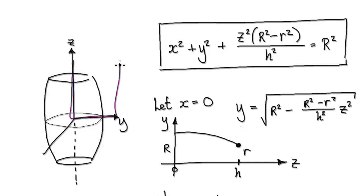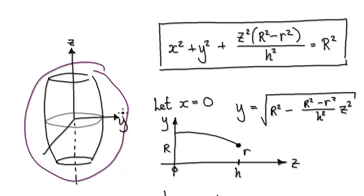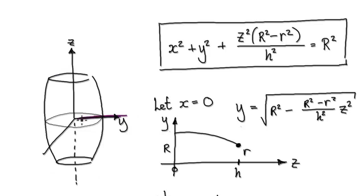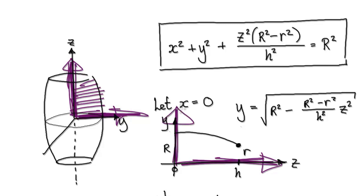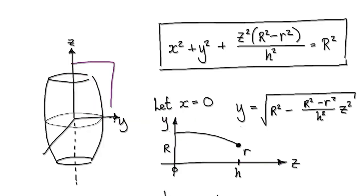Let's look at this part here. At the moment this picture is in 3D, and I want to translate it to 2D. We are moving in the positive Z direction, and Y is in the positive direction. What I'm trying to do is translate this 3D image into a 2D image so we can set up the integral.